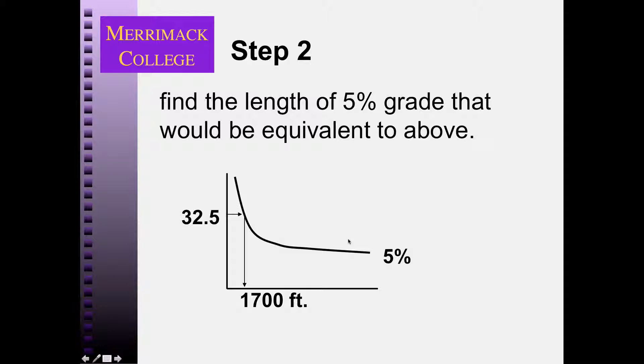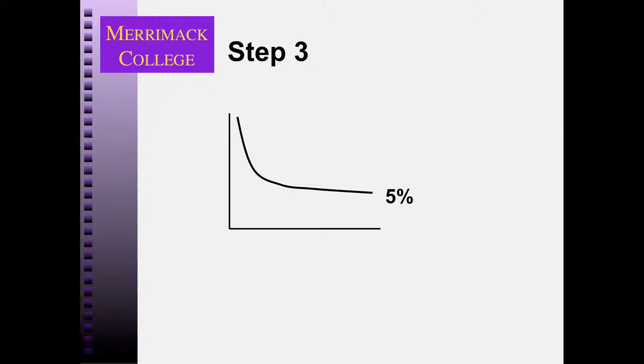And the answer is 1,700 feet. Okay, so that 4% grade is equivalent to a 1,700 foot 5% grade. If I add that to the 5% grade that follows, I have this many feet of 5% grade equivalent. So the exit speed is 27 miles per hour.